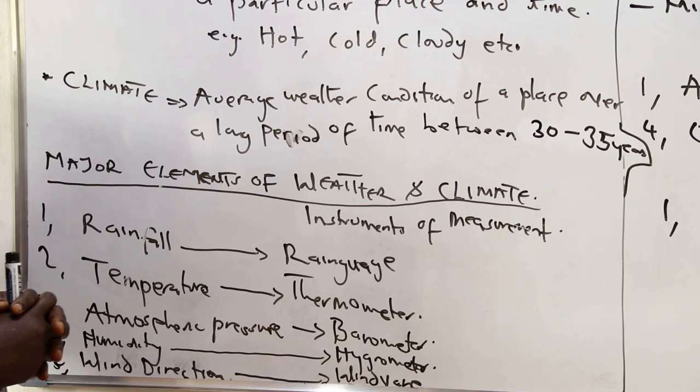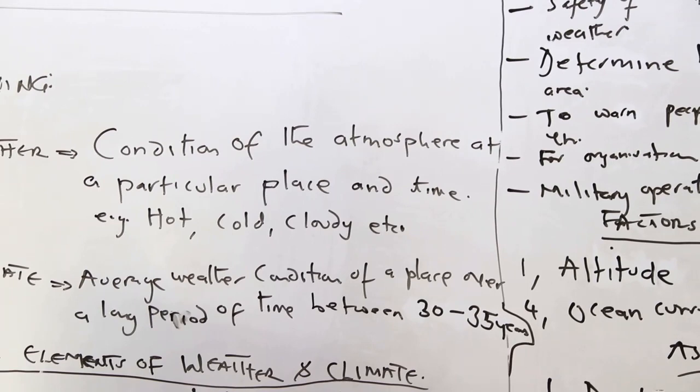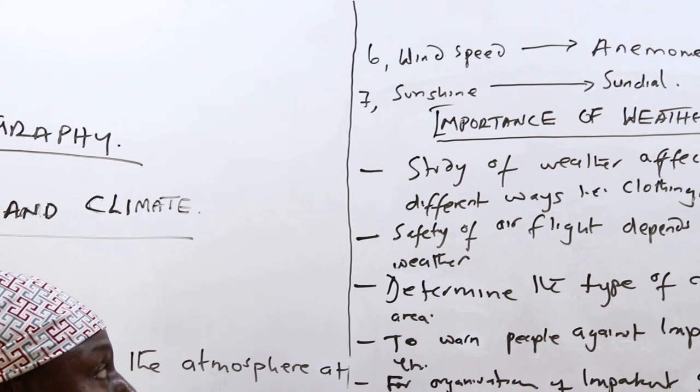Wind has direction and it has speed. You can measure wind direction by using a wind vane, and you can equally measure wind speed by using an anemometer. The last element of weather and climate is sunshine, and this can be measured by the use of what we call a sun dye.